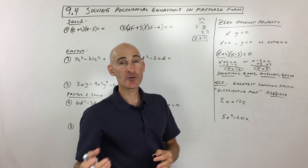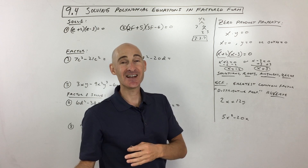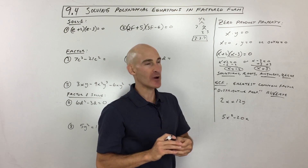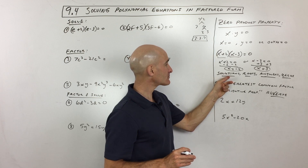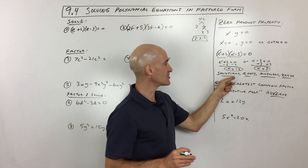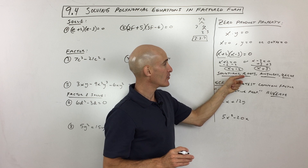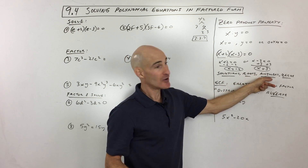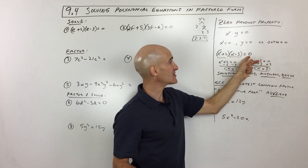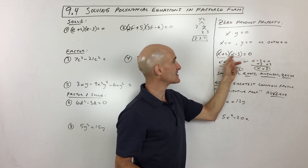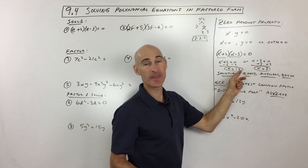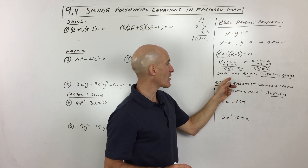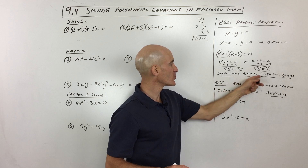A little note about terminology — I've often been mentioning synonyms throughout this course. When you talk about solving like this, you could call these solutions. They're oftentimes referred to as roots, answers, or zeros, because you see how this is equal to zero. So 3 would make this equal to zero — we call it a zero. These are basically synonyms, so you want to memorize: solutions, roots, answers, and zeros.